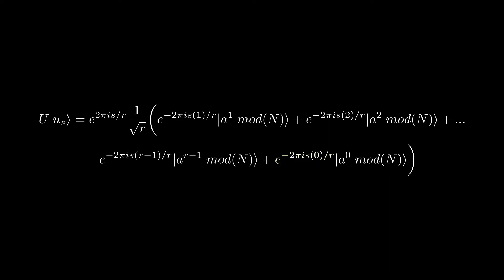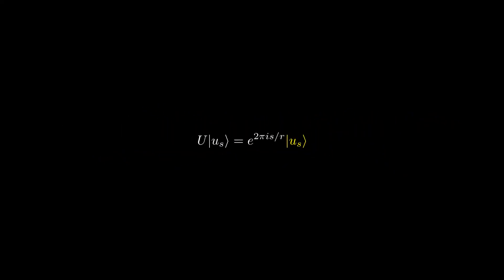Now, as you can see, this whole state becomes the us state. This means that the us state is an eigenvector of the U gate with an eigenvalue of e to the power of 2 pi i s over r. This means that if we can construct the us state, we can use the quantum phase estimation algorithm to get the value of s over r.